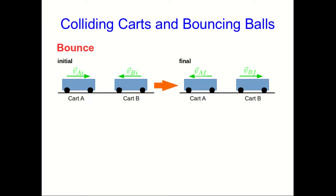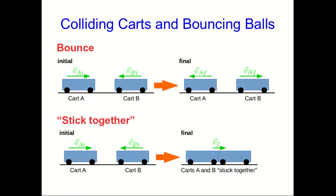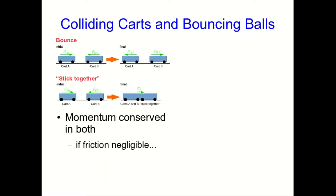At this point we've seen two quite distinct situations: one where the carts come together and bounce off each other—we usually do that with repulsive magnets on the carts—and another which we usually do with velcro where they stick together. Something to notice is that momentum is conserved in both of those as long as friction is negligible.